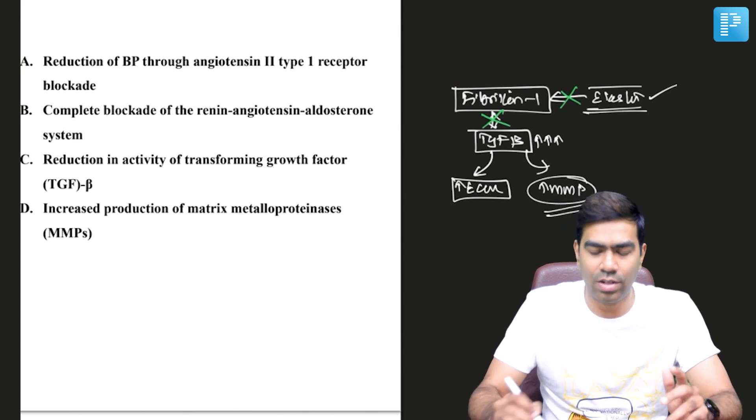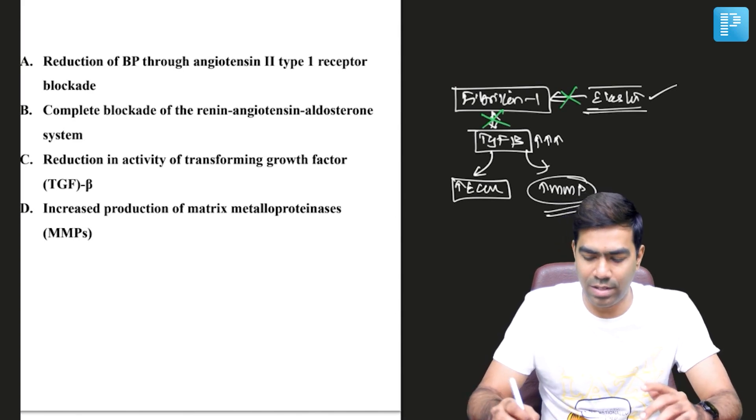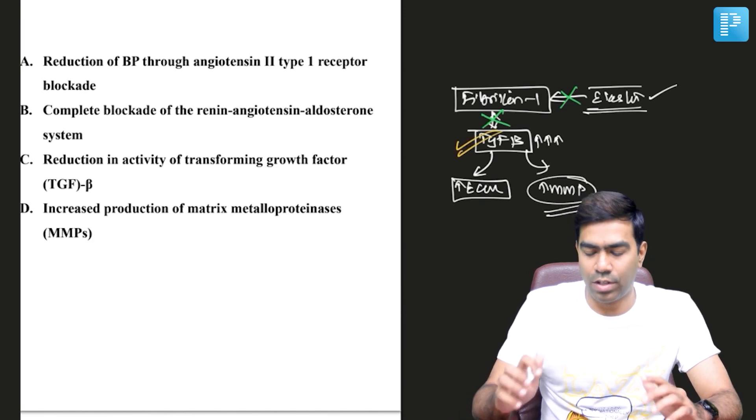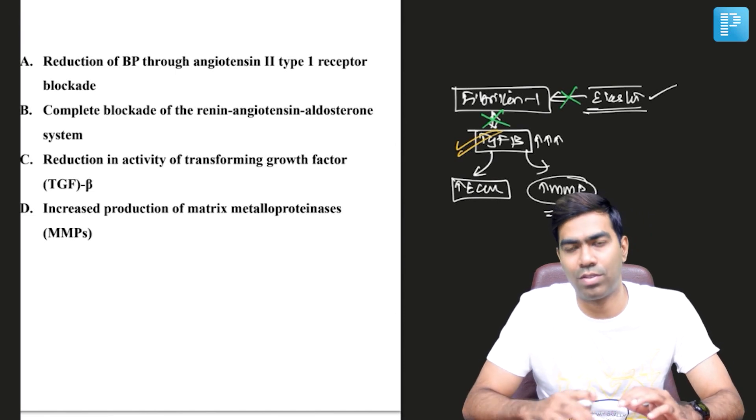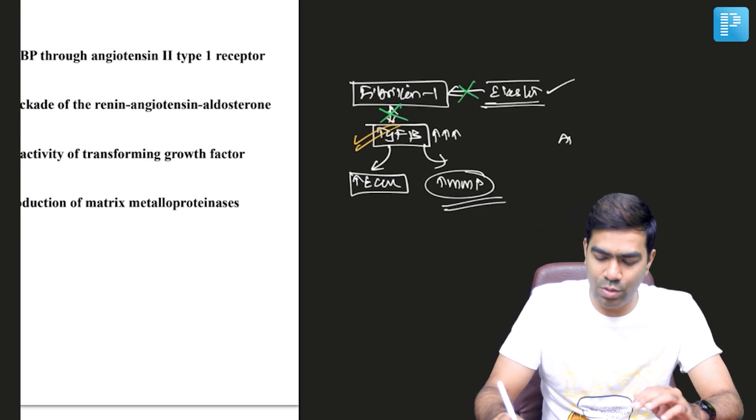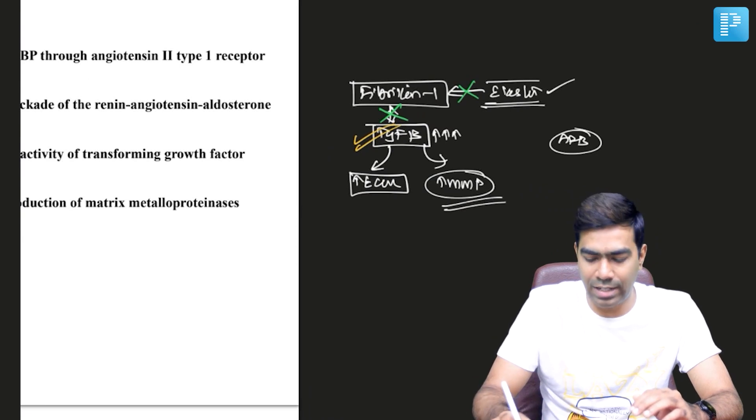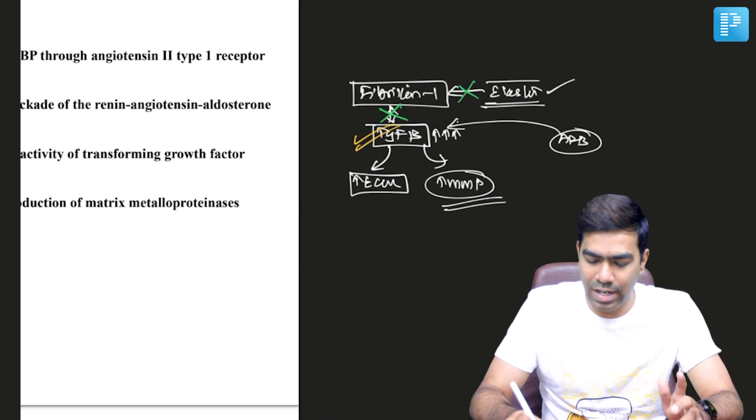High TGF-beta is one of the cornerstones for problems that happen in patients with Marfan syndrome. It's believed that angiotensin receptor blockers, by acting on angiotensin-1 receptors, can downregulate the production of TGF-beta.